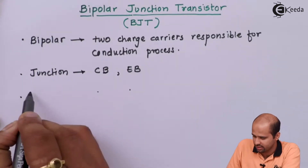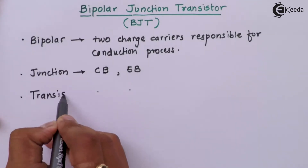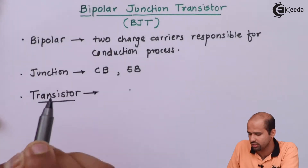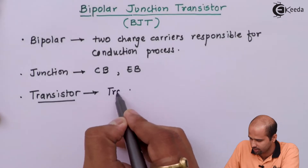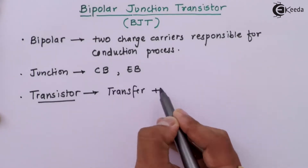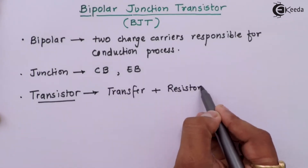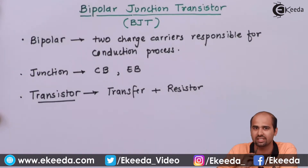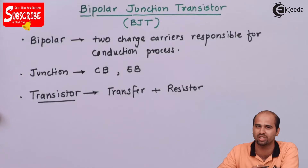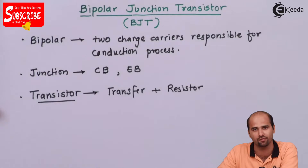The next part is transistor. This word means transfer of resistance. This resistance is different for different parts of the BJT. The BJT has three parts — emitter, base, and collector. Let us now go for the construction of BJT.